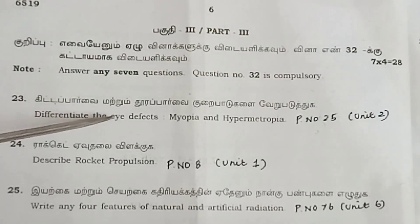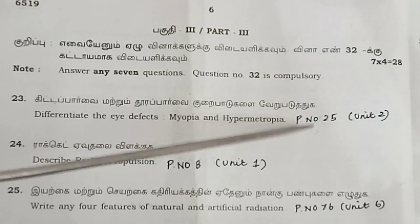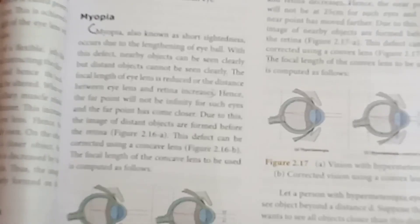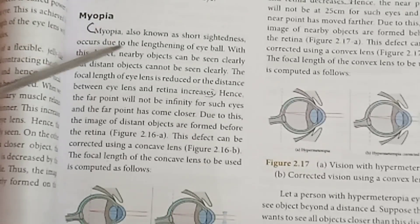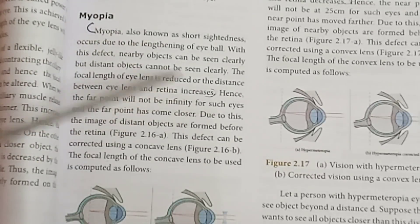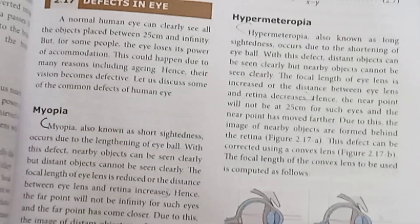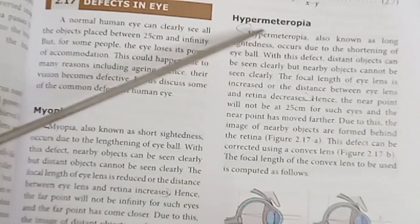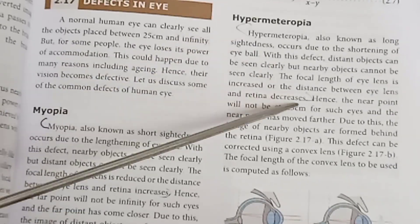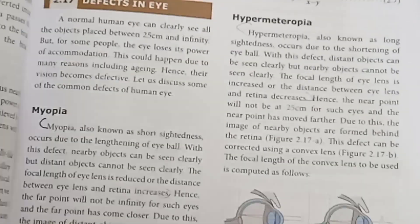Question 23: Differentiate the eye defects myopia and hypermetropia. Page number 25. Myopia: the image forms in front of the retina (distance to retina increases). Hypermetropia: the image forms behind the retina (distance to retina decreases).